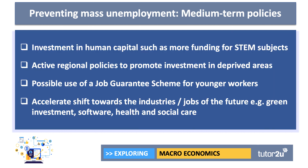In the medium term, as we come through the crisis and move into 2021 and beyond, how can employment be sustained and improved? One option would be to lift investment in human capital — the skills, qualifications, and experiences of the labour force, for example increasing funding for STEM subjects. Another would be a more activist regional policy to promote new investment in deprived areas, perhaps using a job guarantee scheme for younger workers, and accelerating the shift towards the industries and jobs of the future — in software, health and social care, and green investment.